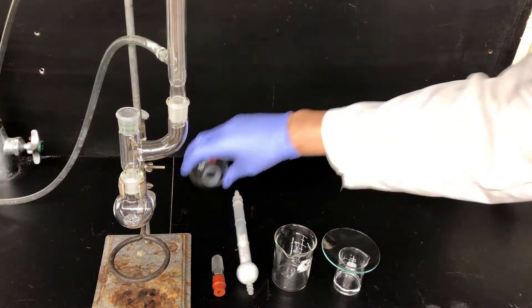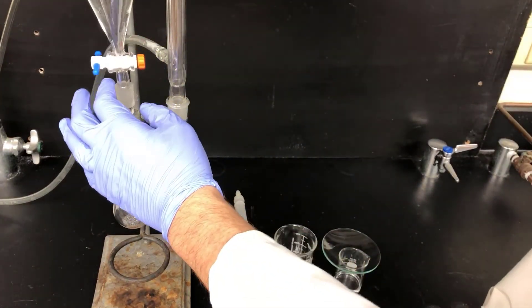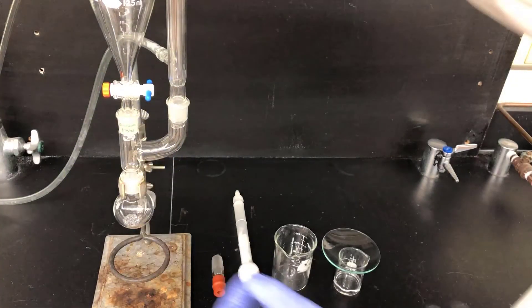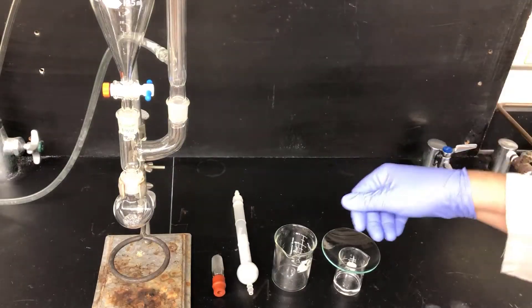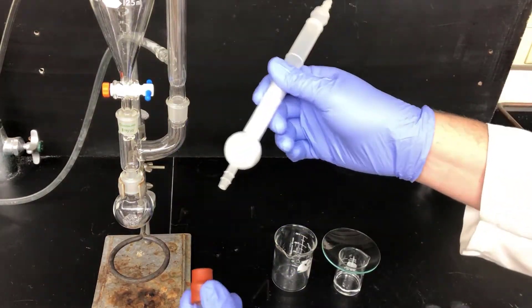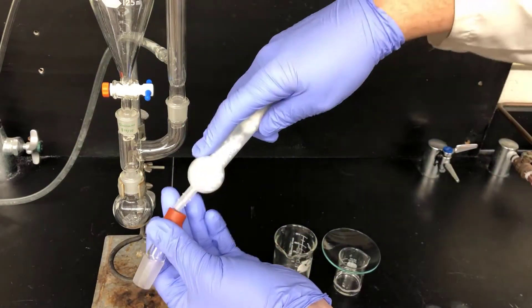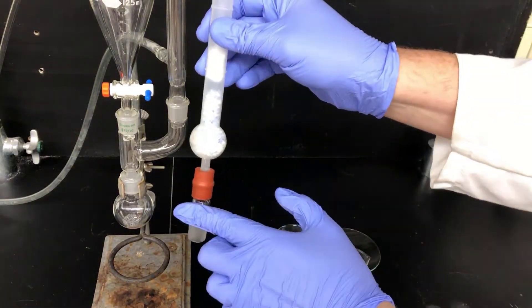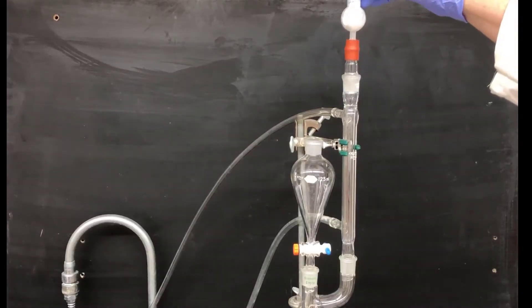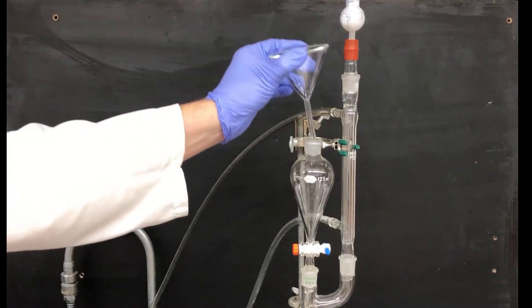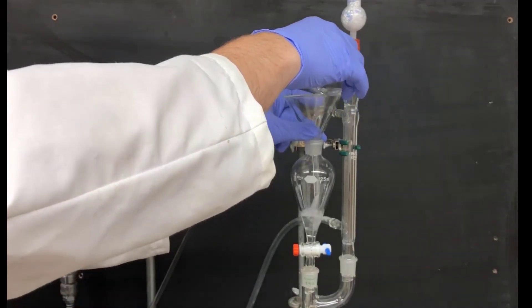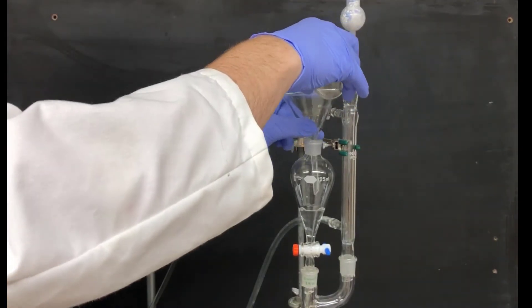Now I'm going to plug the separatory funnel into the other open port on the U-shaped adapter. This separatory funnel is going to get used as an addition funnel. It's going to allow us to add bromobenzene solution a little bit at a time. Now I'll take the thermometer adapter and plug the drying tube into it through the rubber boot. This will allow me to connect the drying tube to the top of the apparatus, as shown here. Now I'm pouring the bromobenzene solution and ether into the separatory funnel to allow me to add it slowly to the magnesium in the flask below.